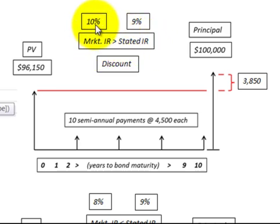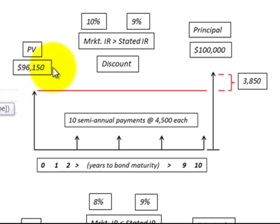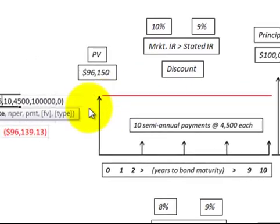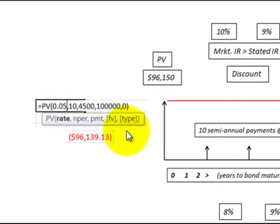Here the market rate was 10% and the stated rate was 9%. You can see that you need a greater rate of interest to amortize this bond up to its principal amount, because the present value is less than the principal amount. I determined that present value just using an Excel function.